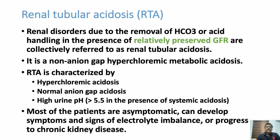Renal tubular acidosis is a defect in removal of bicarbonate or acid handling with normal renal function — GFR is normal. It is a non-anion gap, hyperchloremic metabolic acidosis. Three important features are hyperchloremia, acidosis with normal anion gap, and urine pH more than 5.5.